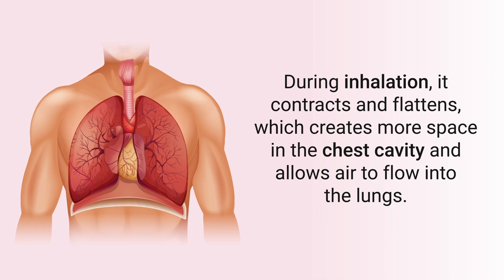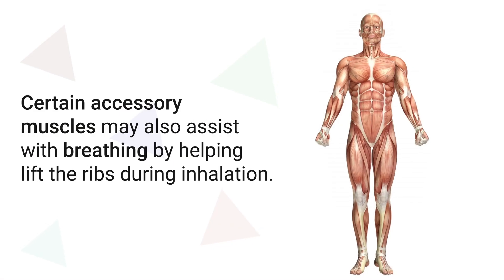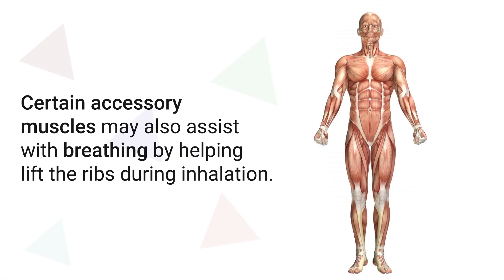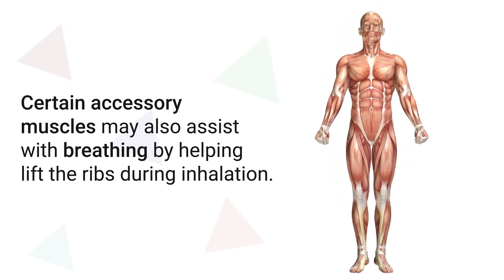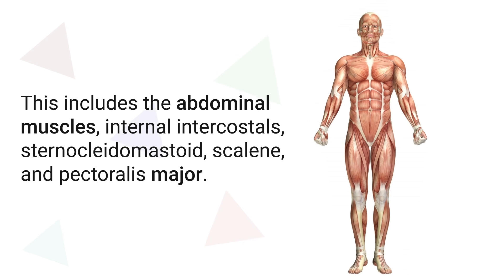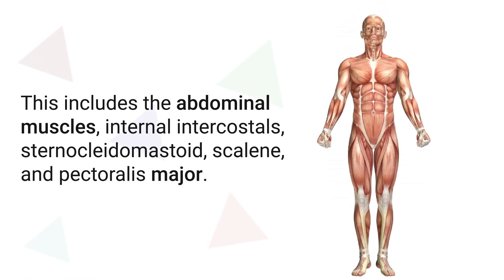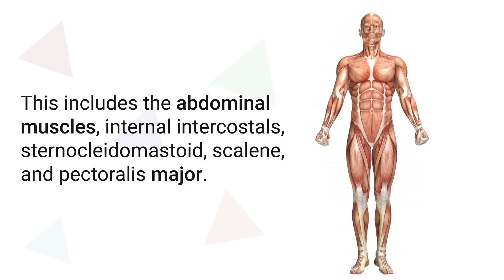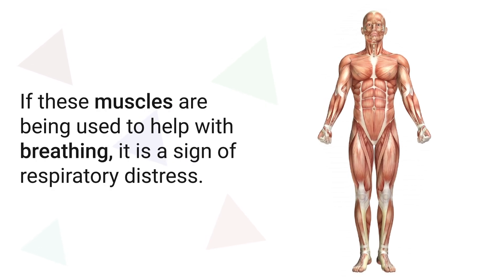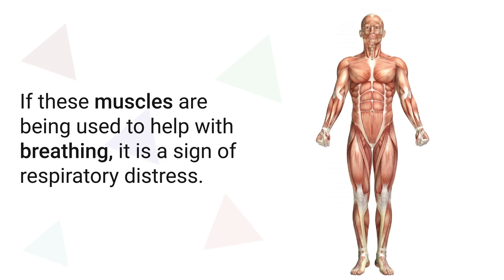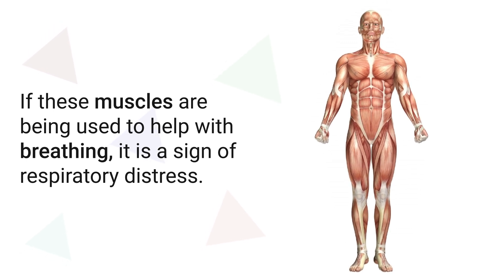Certain accessory muscles may also assist with breathing by helping lift the ribs during inhalation. This includes the abdominal muscles, internal intercostals, sternocleidomastoid, scalene, and pectoralis major. If these muscles are being used to help with breathing, it is a sign of respiratory distress.